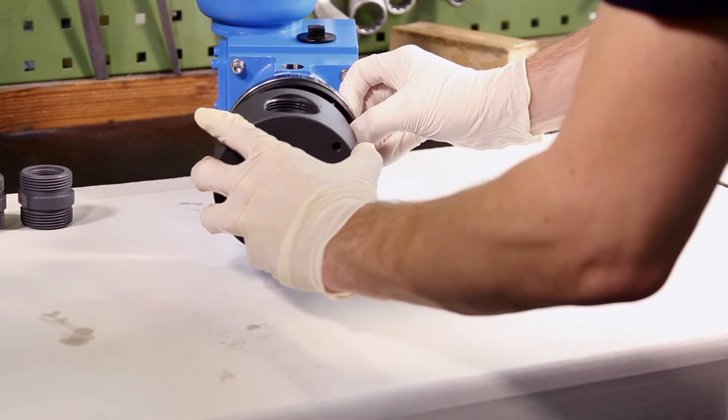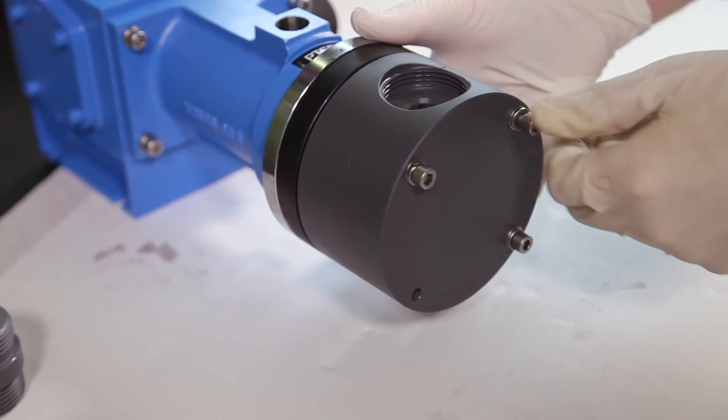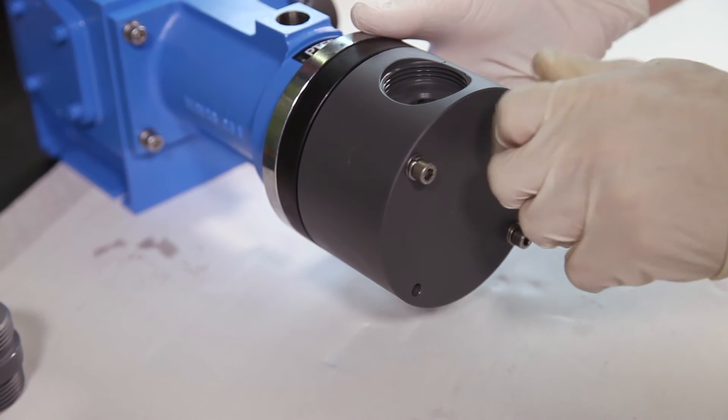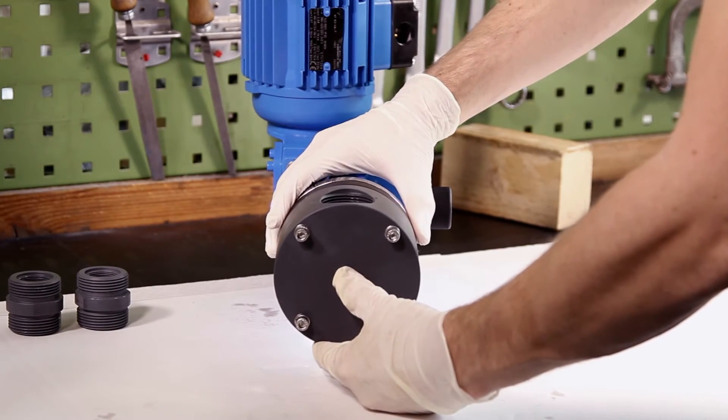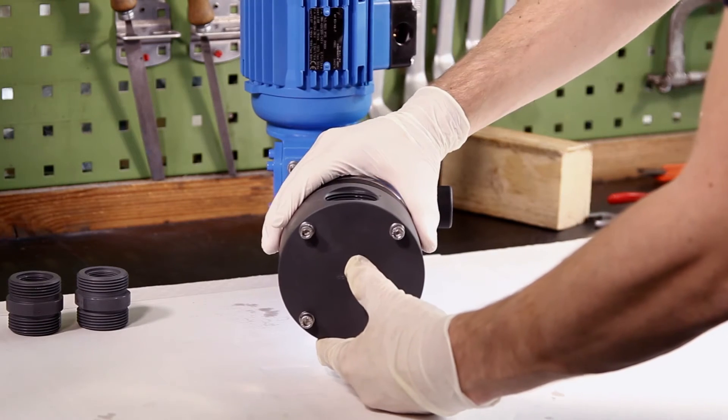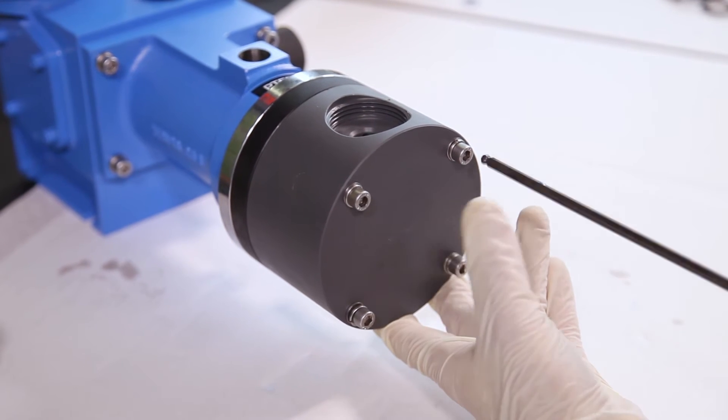The dosing head is put onto the fixing plate and the screws are lightly tightened. The dosing head and the diaphragm support plate are now aligned and bolted in line to the mounting plate. Please tighten the screws only hand tight.